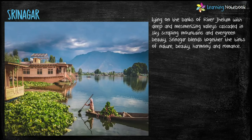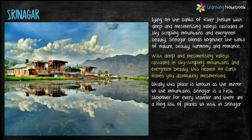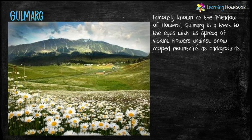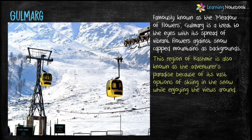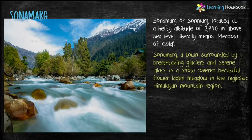The first famous place to visit in Jammu and Kashmir is Srinagar, also known as mirror to the mountains. It is a first stop-over for every traveler and there is a long list of places to visit; the main highlight is the lake. Next place is Gulmarg, also known as meadow of flowers. It is a treat to the eye with its spread of vibrant flowers against snow-capped mountain backgrounds. The region is also known as an adventurous paradise because of its vast options for skiing.